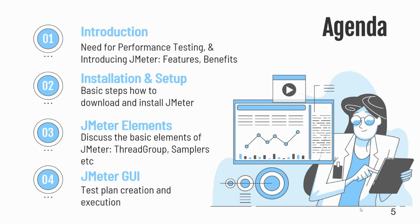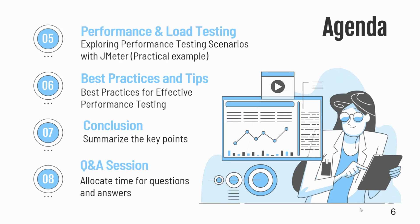Let's discuss the agenda of this presentation. First, introduction — exploring the need for performance testing and introducing Apache JMeter. Second, installation and setup — guiding you through downloading and installing Apache JMeter. Third, JMeter elements — key elements such as thread group, sampler, and listener. Fourth, JMeter GUI. Fifth, performance and load testing with a practical example. Sixth, best practices and tips. And finally, a summary of the key points covered.